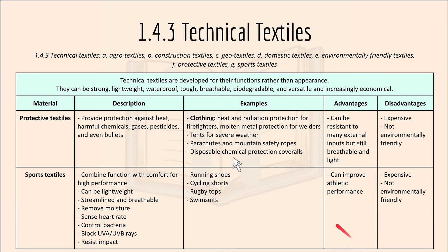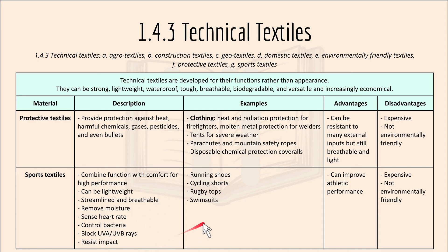Protective textiles provide protection against heat, harmful chemicals, gases, pesticides and even bullets. Examples include heat and radiation protection clothing for firefighters, parachutes and disposable chemical protection coveralls. An advantage is resistance to many external inputs while remaining flexible and light; a disadvantage is that they are expensive and not environmentally friendly. Sports textiles combine functionality with comfort for high performance — lightweight, streamlined and breathable — removing moisture and monitoring heart rate. Examples include running shoes, cycling shorts, rugby tops and swimsuits. An advantage is improved athletic performance; a disadvantage is expense and environmental impact due to the high technology involved.